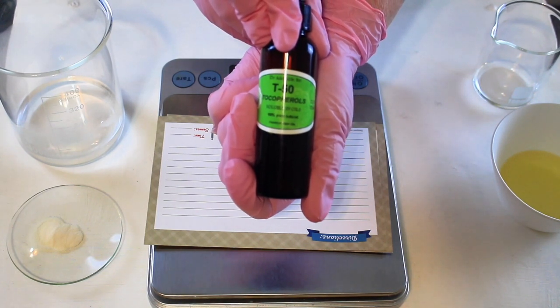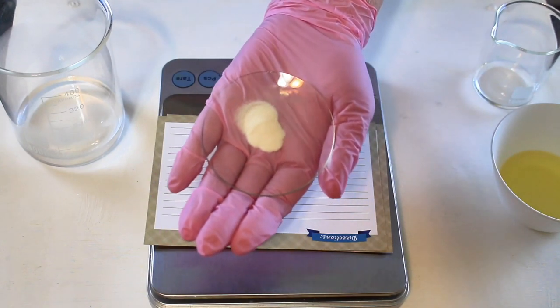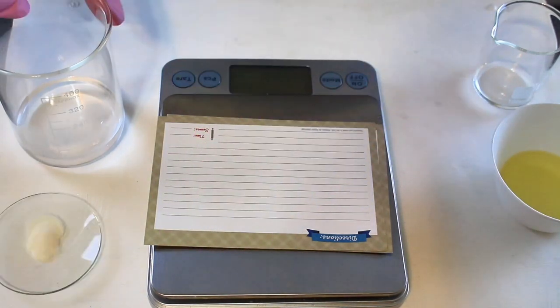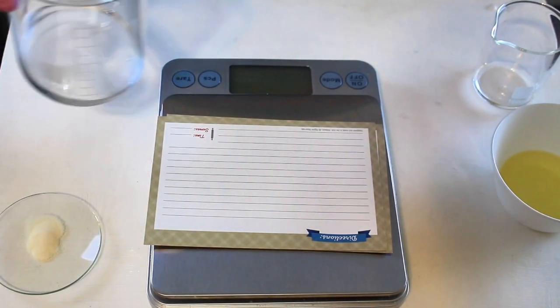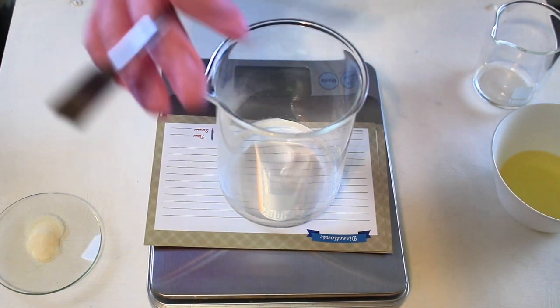This is an antioxidant and it extends the shelf life of your oils in your products. We're using some xanthan gum, which is a natural thickener. So let's go ahead and put it together. I used 58.35 grams of distilled heated water to 122 degrees.